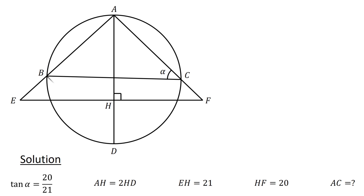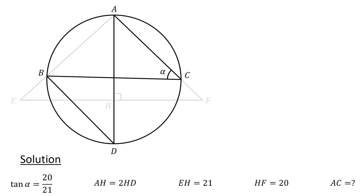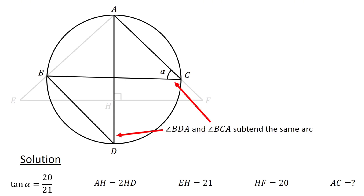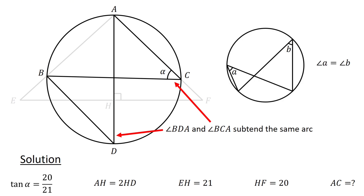First, connect B to D and then consider the lines BD, BC, AD, and AC and the circle. Angle BDA and angle BCA subtend the same arc. Recall that angles subtending the same arc are equal. Therefore, we have angle BDA equals angle BCA equals alpha.